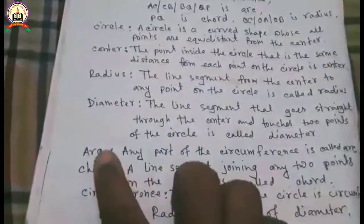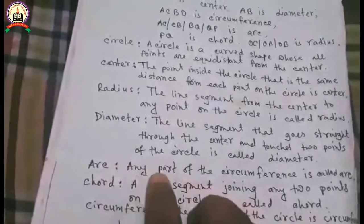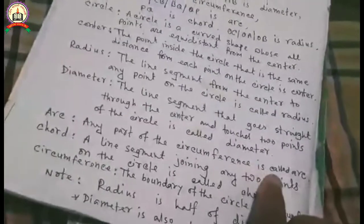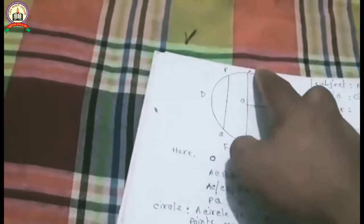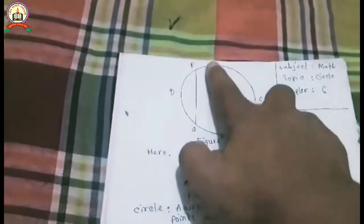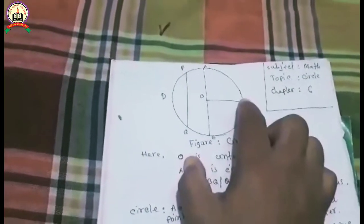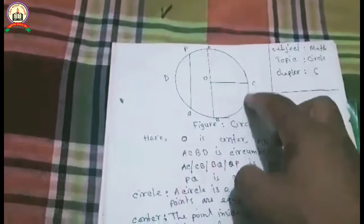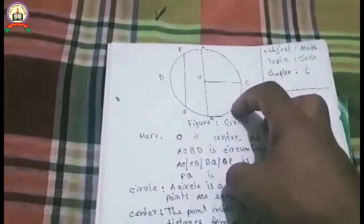The arc. Any part of the circumference is called an arc. This boundary is called circumference, and any part of circumference such as AC is a part of circumference, so it is arc. CB is also a part of circumference, so it is arc.